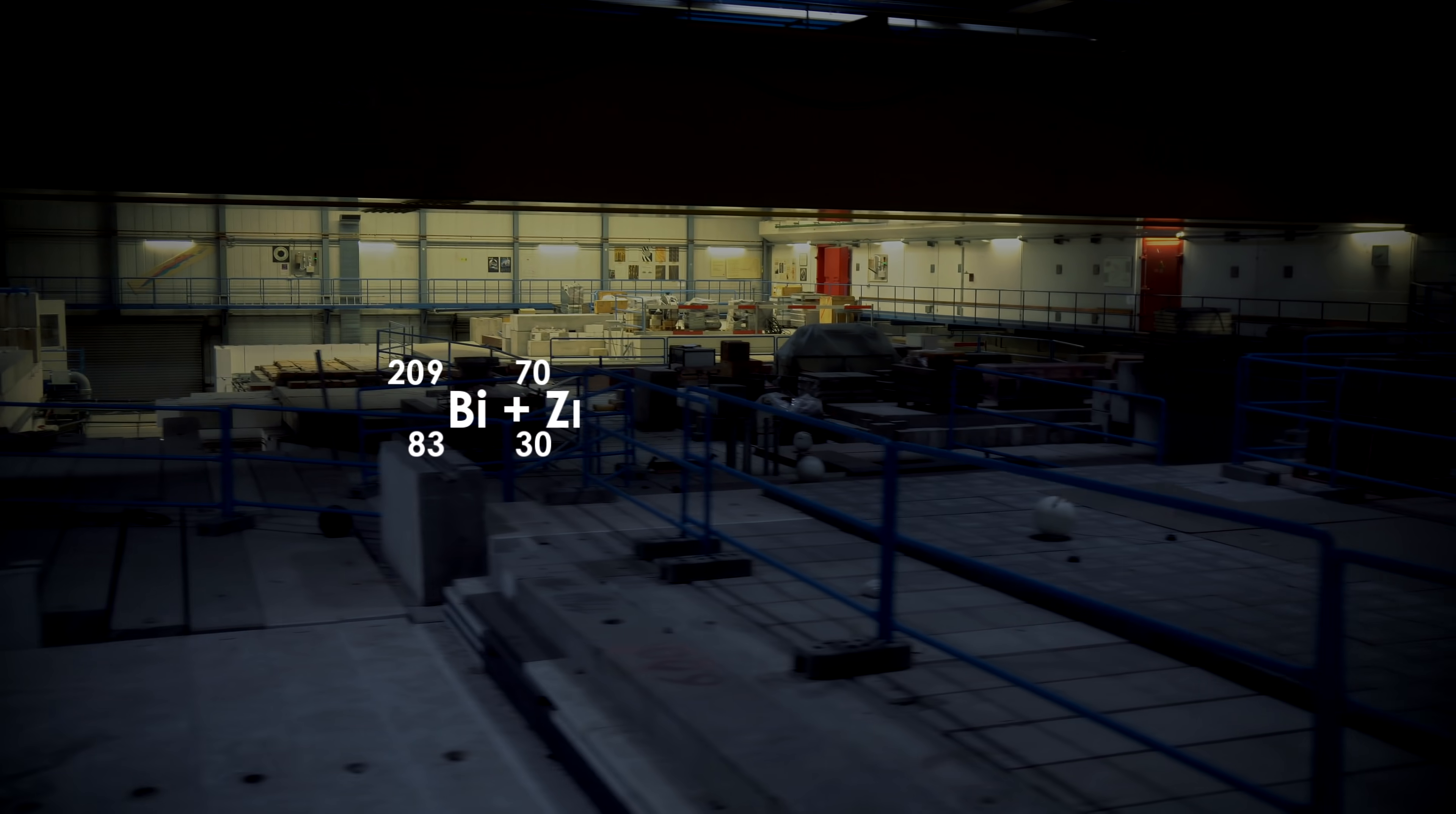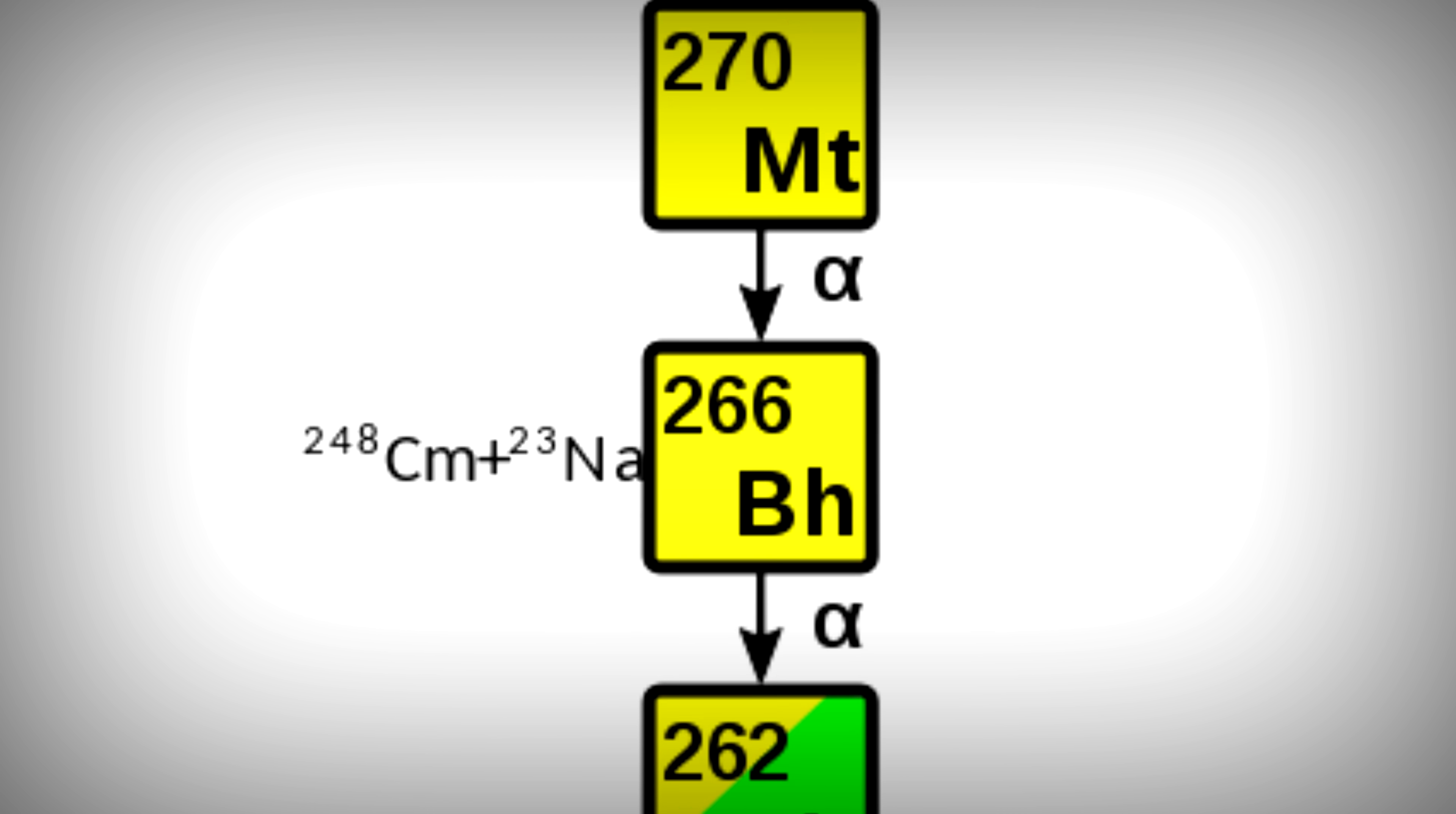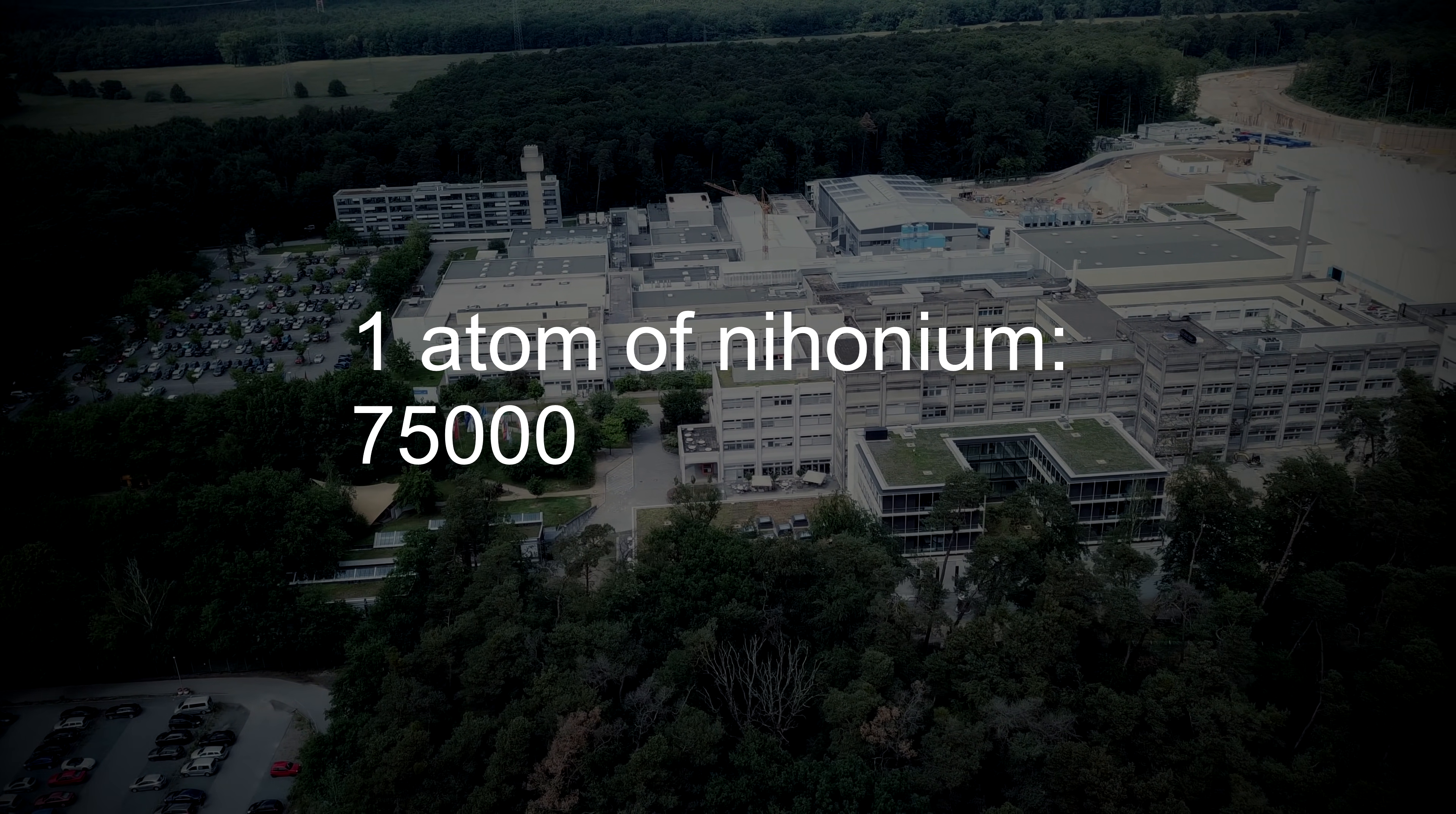The obtained isotope nihonium-278 had just a 1.4 millisecond long half-life. The new element was detected by the byproducts of its decay. There were four of them, and the last one was the spontaneous fission of dubnium. Do not forget that one hour of running a particle accelerator cost more than $1,000. That is why one atom of element 113 costs about $7.5 million.